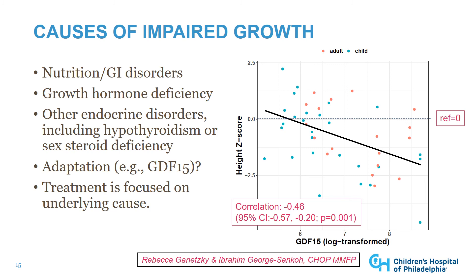GDF15 is a hormone identified as a potential biomarker of mitochondrial disease that also affects energy balance. Data from the CHOP Mitochondrial Medicine Frontier Program, examined by Rebecca Ganeski and Ibrahim George-Sanko, showed that individuals with higher GDF15 levels — whether adults or children — had a lower height z-score, meaning they were shorter than a reference population. The higher the GDF15 level in a given individual, the shorter they were relative to age and sex-matched peers, which could reflect the body's response to energy stress. Treatment of impaired growth is focused on addressing the underlying cause.